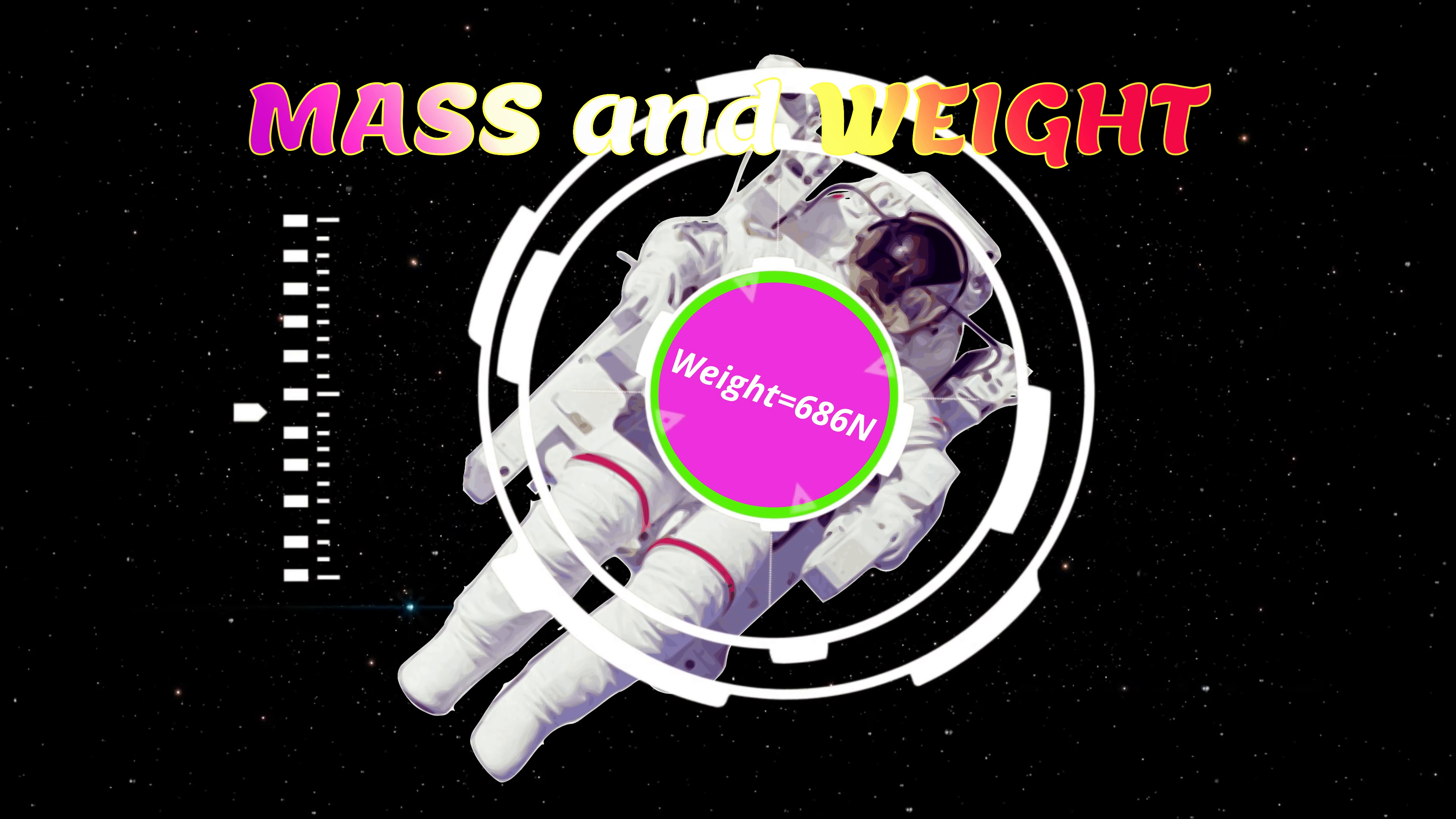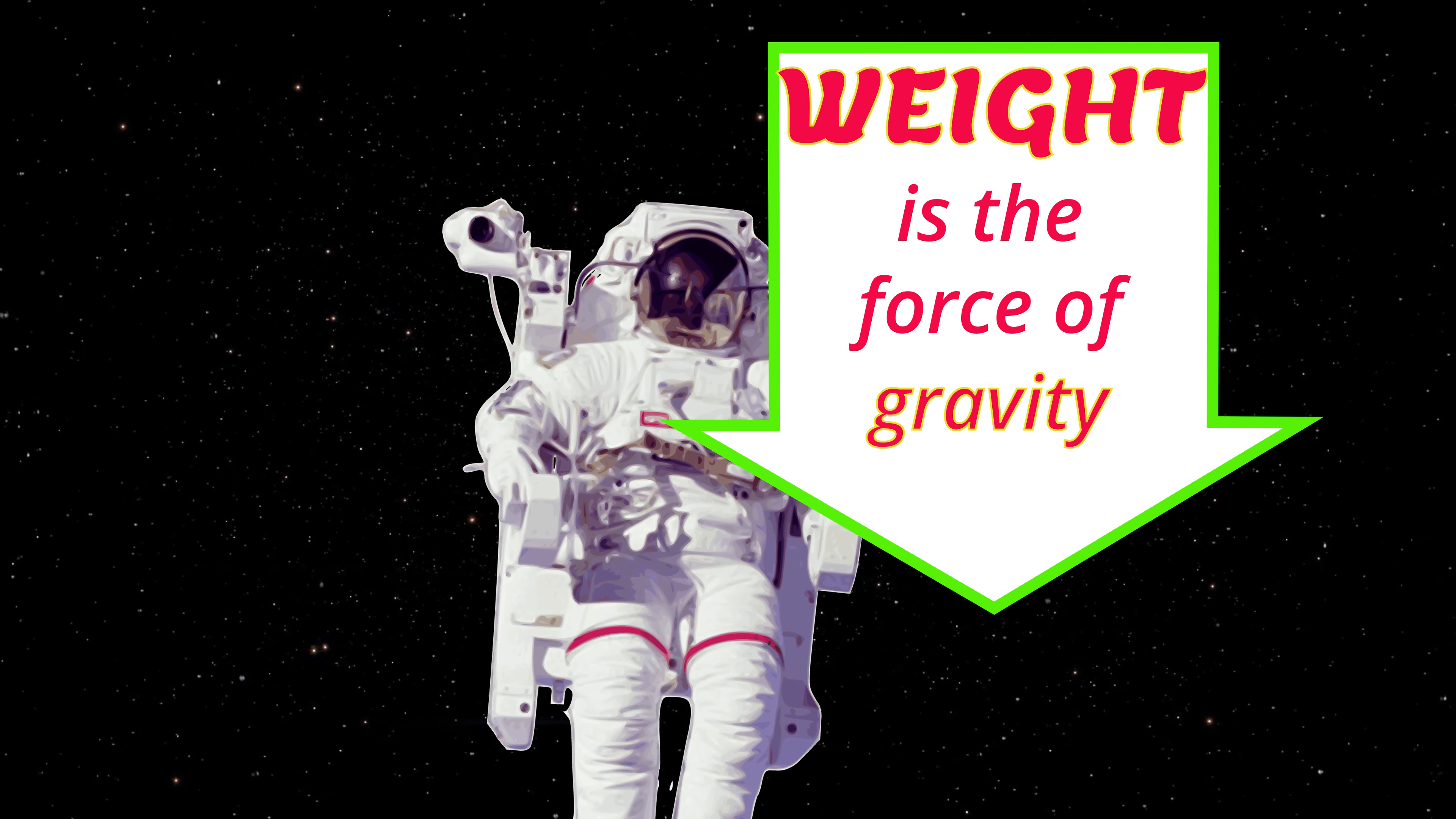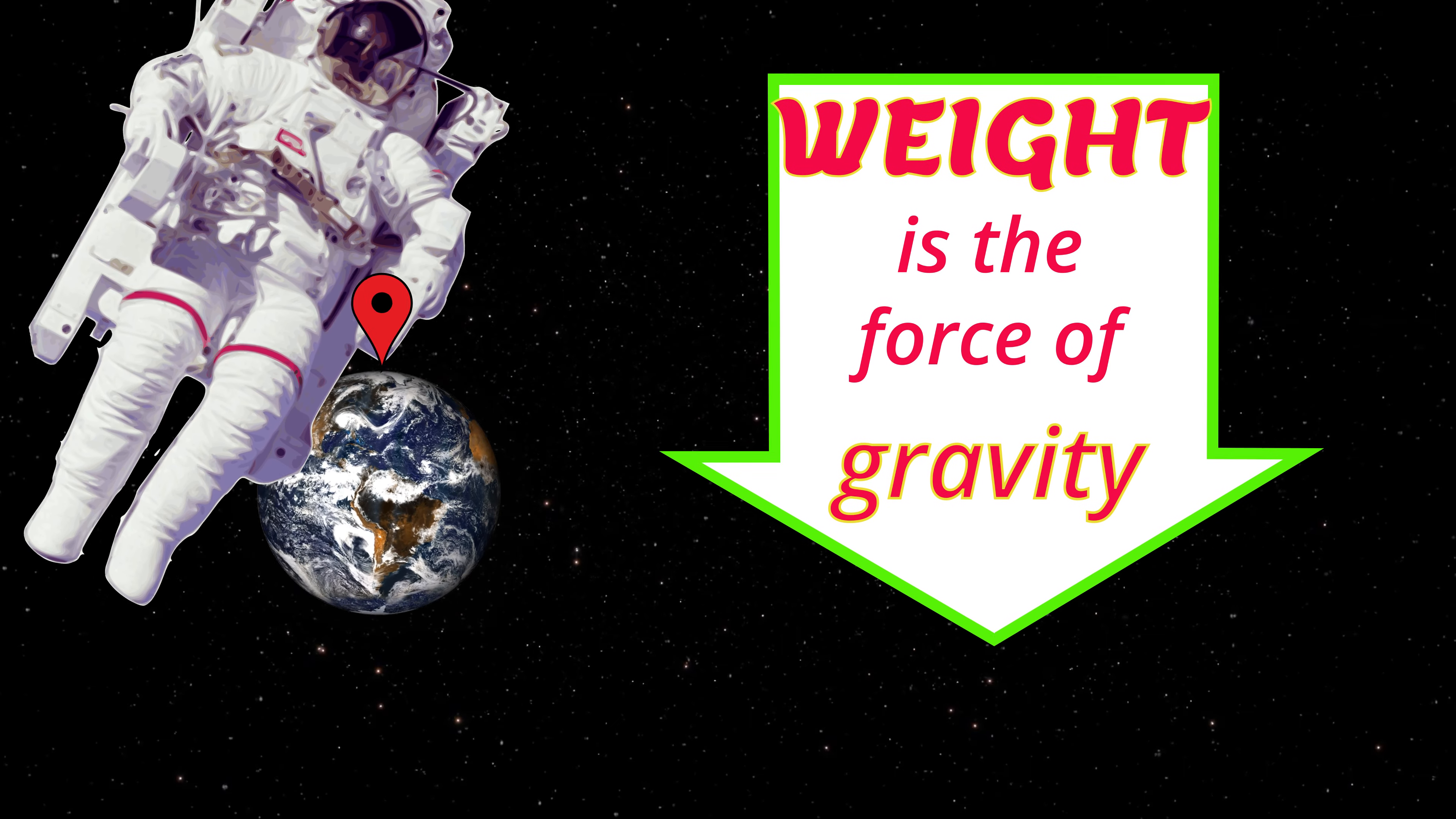Well, mass is the amount of matter in an object, and that's the same wherever you are in the universe. Mass is measured in kilograms. Weight is the force of gravity on an object, and it's different at different places in the universe, depending on the gravity of each planet or moon.